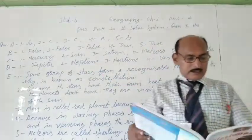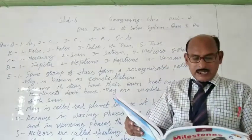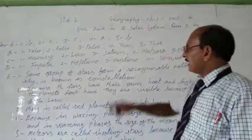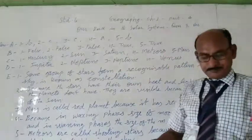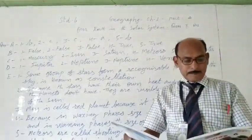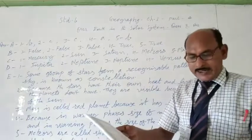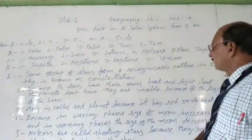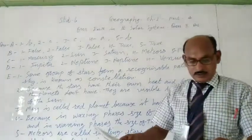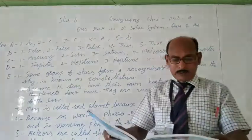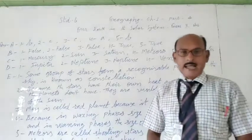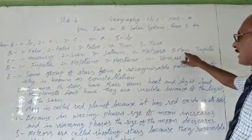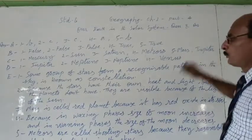Third, Saturn is a gaseous planet with rings. So the answer is Saturn. Fourth, meteors are also known as shooting stars. So the answer is meteors. Five, asteroids lie mainly between the orbits of Mars and Jupiter.